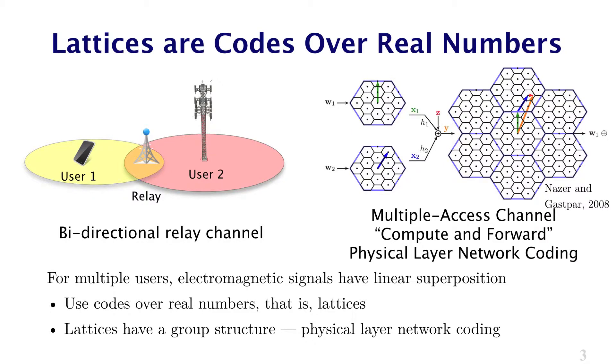Lattices are codes over real numbers and many communication signals exist in the real world as real signals. Electromagnetic signals are, and if you add two signals together they have linear superposition.